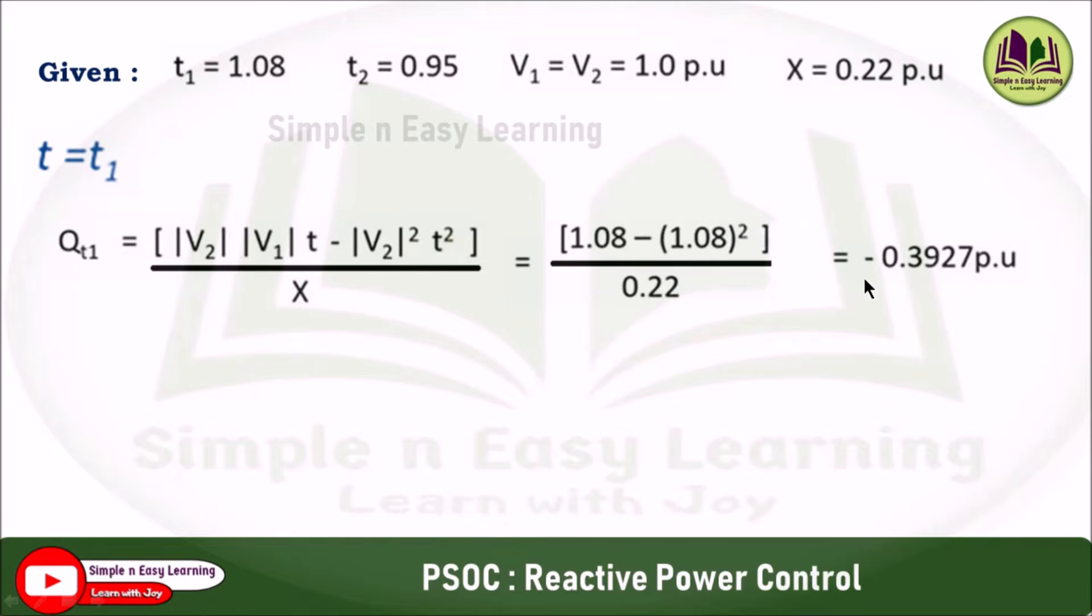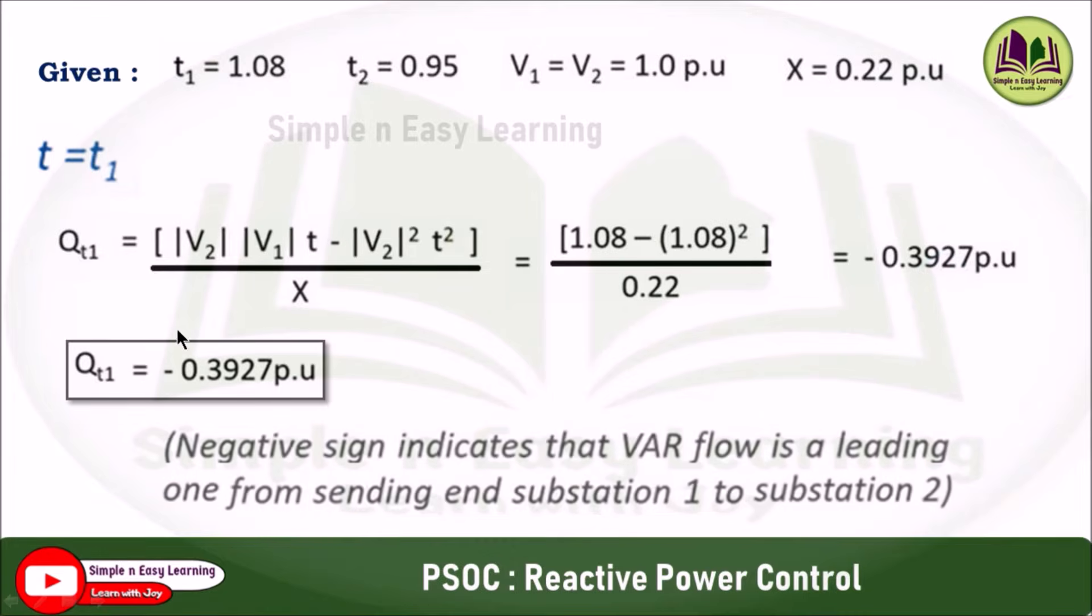Substituting, you will get minus 0.3927 per unit. So QT1 equals minus 0.3927 per unit. The negative sign indicates that the reactive power flow is the leading one from substation 1 to substation 2.